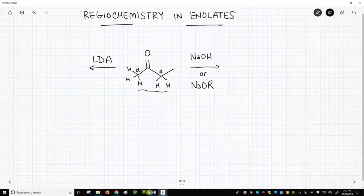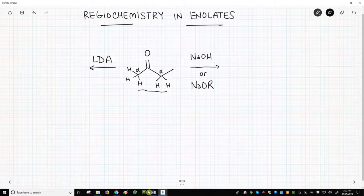Well, it depends on the base. For LDA, a bulky, very strong base, you tend to remove the proton from the less hindered carbon to form the enolate on the left.